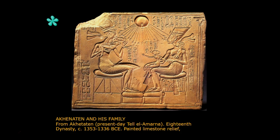Getting back to the rays of the sun, they end in a kind of abstract representation of hands. Some of the hands hold the looped cross known as an Ankh, an Egyptian symbol of life. Thus, the sun is giving life to the ruler and his family. The implication is that the king's special relationship to the chief god ensures Egypt's safety and success.